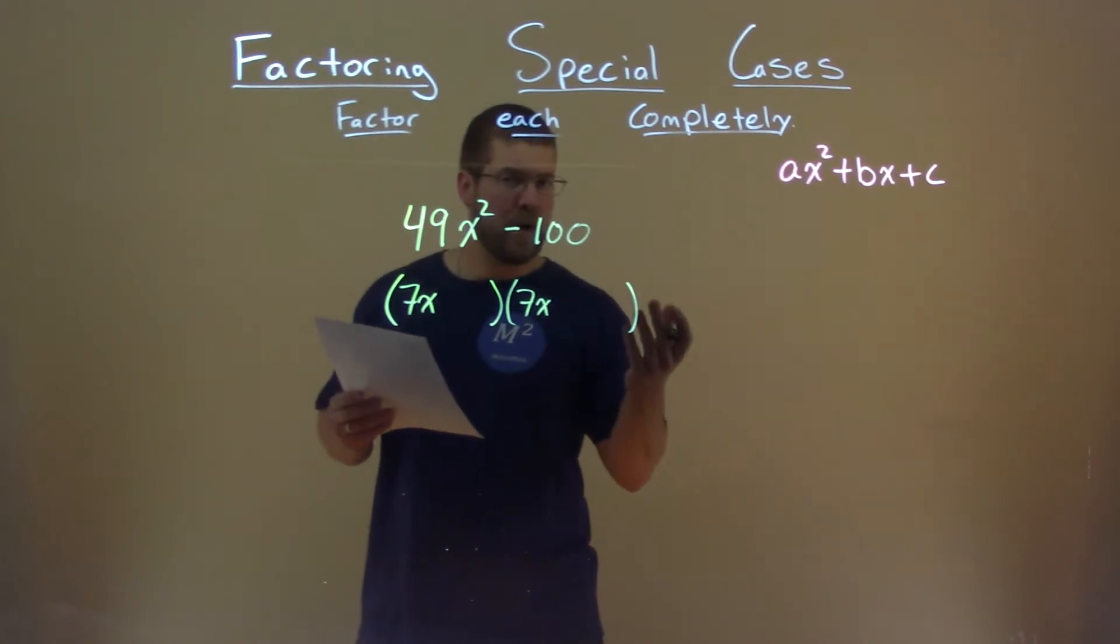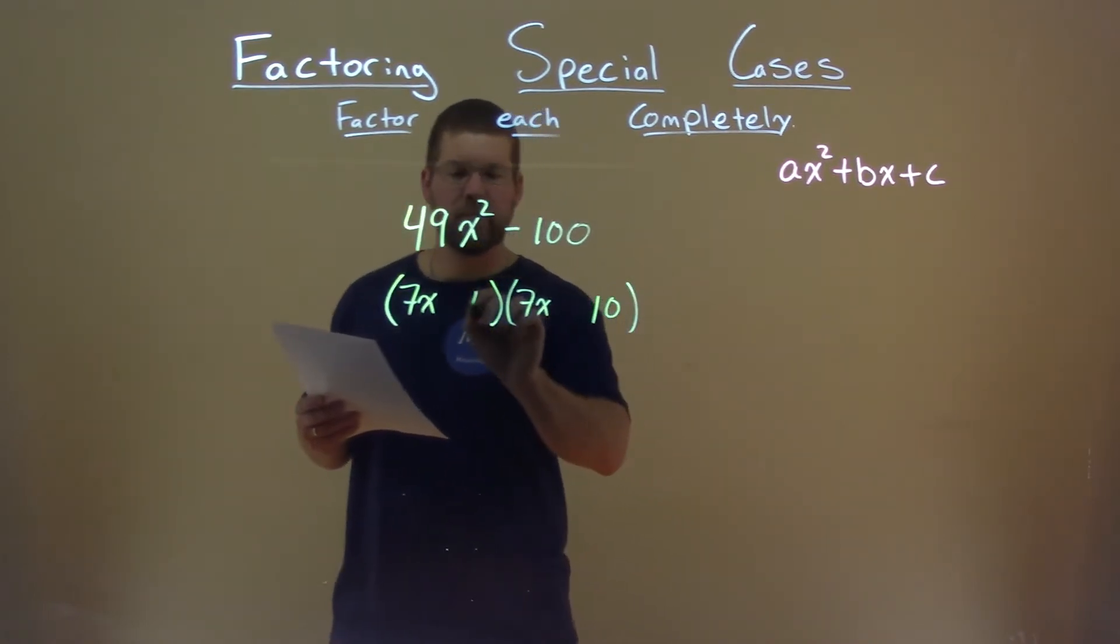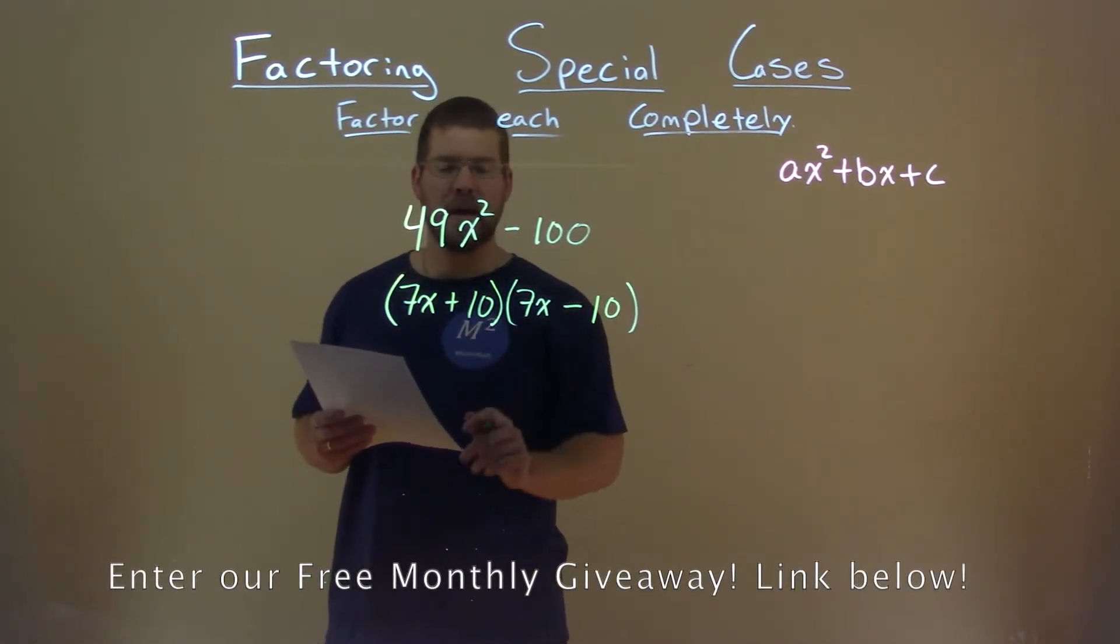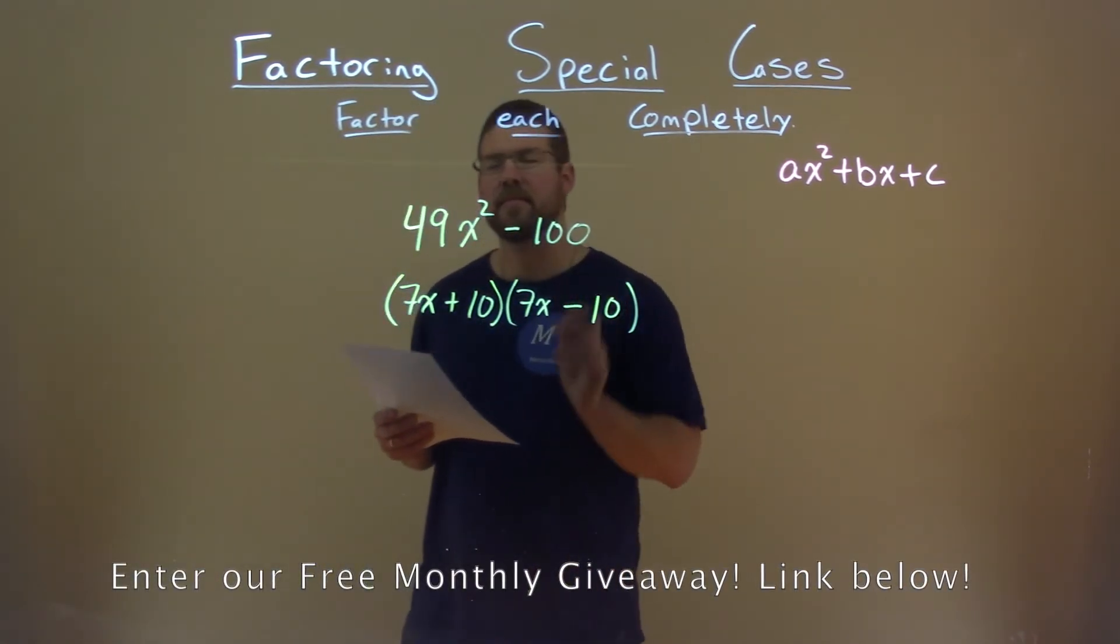Same with 100, square root of 100 is 10, 10 here and 10. But it's a negative 100 so one has to be positive one be negative, 10 times a negative 10, negative 100.